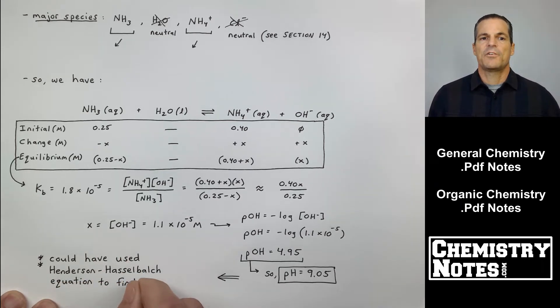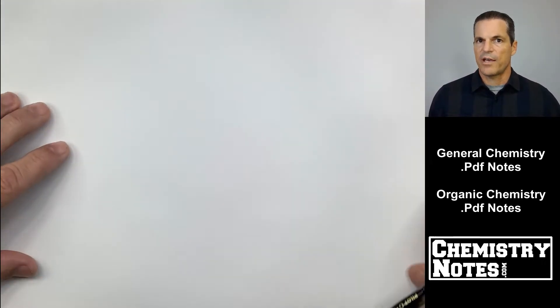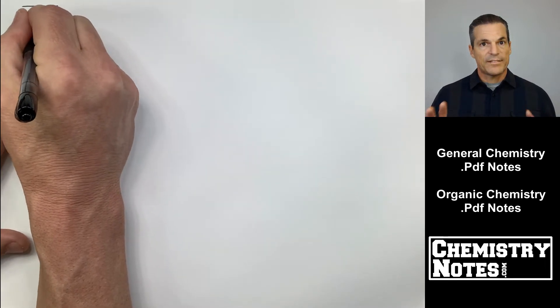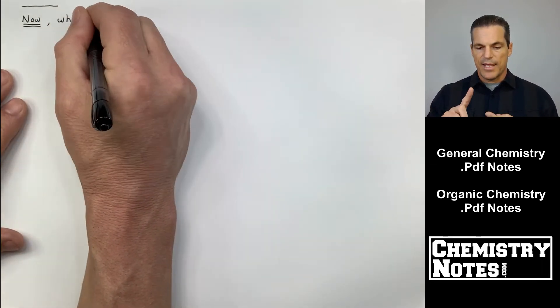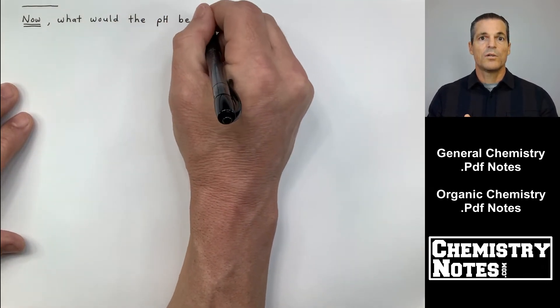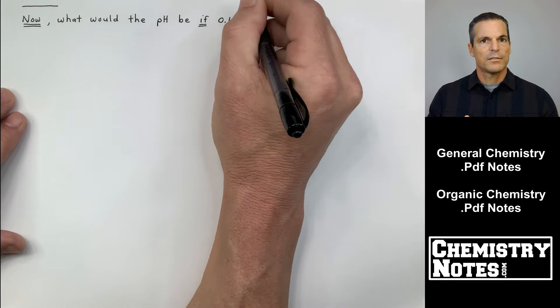And as I stated earlier, I could have used the Henderson-Hasselbalch equation to solve for this as well. I would have gotten the pH value the same, 9.05. Now that's a buffer because I had my NH3 and I also had the common ion that came from NH4Cl, which is NH4 plus.